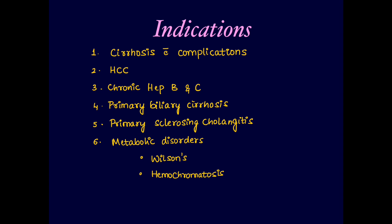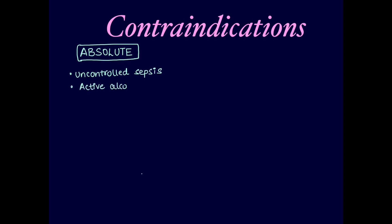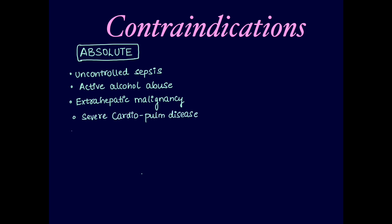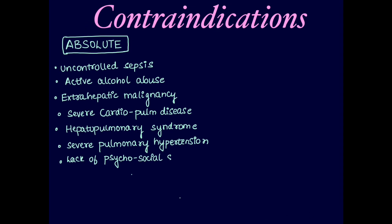All these patients are eligible for a liver transplant. Coming to contraindications, there are absolute and relative types. Absolute contraindications include uncontrolled sepsis, active alcohol abuse, extrahepatic malignancy, severe cardiopulmonary disease, hepatopulmonary syndrome, severe pulmonary hypertension, and lack of psychosocial support.